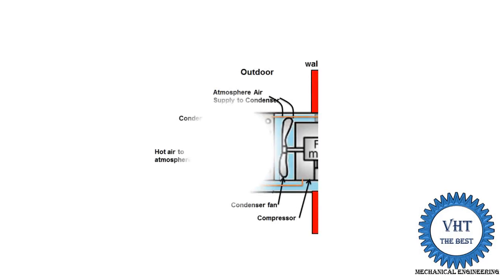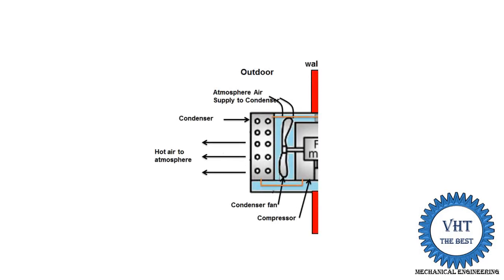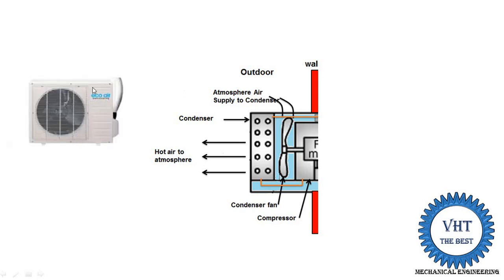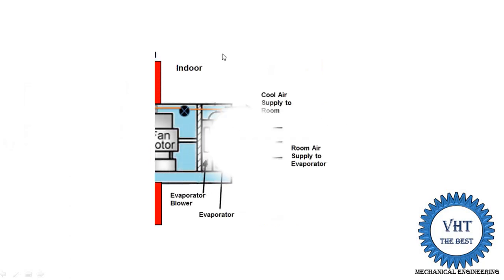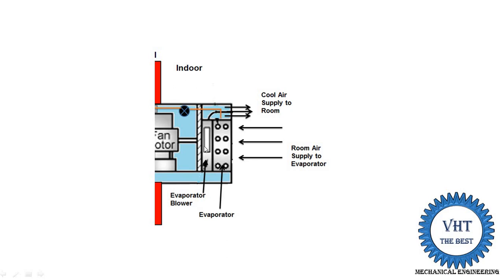The first part is the outdoor unit, which contains the compressor, the condenser, and the condenser fan. It is fitted outside the room, such as on the terrace or the outer wall. The second part is the indoor unit, fitted inside the room, which contains the evaporator and expansion device — either a capillary tube or a thermostatic expansion valve.